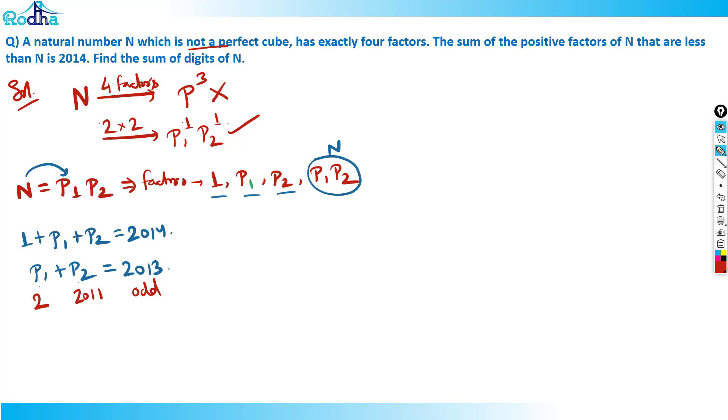What is the value of N? N is p1 times p2. I got p1 as 2 and p2 as 2011. You might wonder if 2011 is prime - the question implies it must be. So N is 2 times 2011, which is 4022. The sum of digits of N: 4 plus 0 plus 2 plus 2 equals 8. That's the answer.